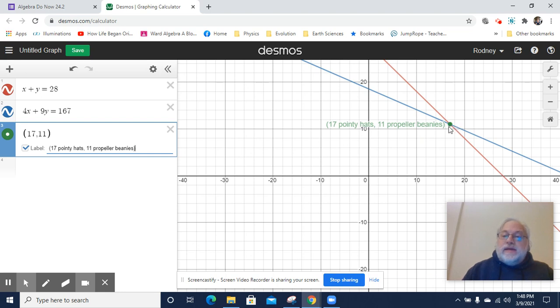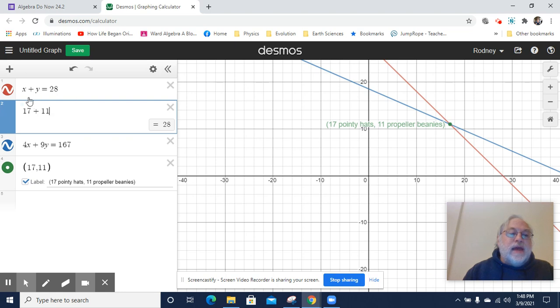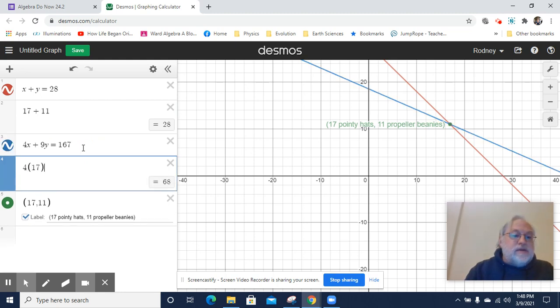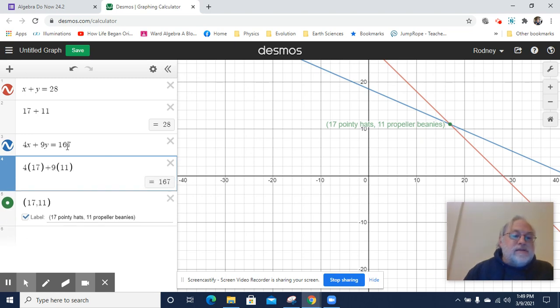And that is what that intersection is. That intersection is telling us when X and Y are the same for both equations, that actually gives us our solution to this situation. This is a system of equations, which means it's two or more equations being considered together. And this is a solution, which is a pair of X and Y values that make these two equations true. And I'm going to demonstrate that really quickly. If I do 17 plus 11, I get 28. So if X and Y are 17 and 11 respectively, it makes that equation true.